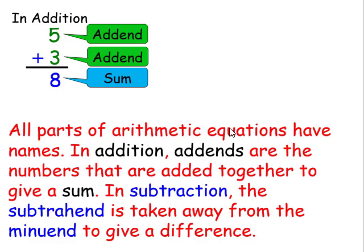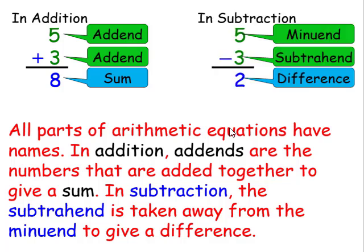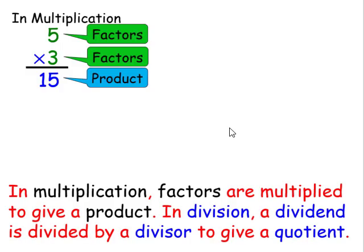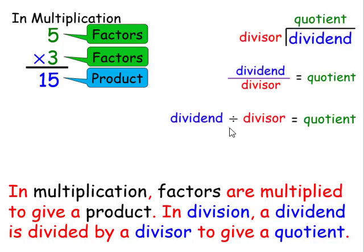All parts of arithmetic equations have names. In addition, addends are the numbers that are added together to give a sum. In subtraction, the subtrahend is taken away from the minuend to give a difference. In multiplication, factors are multiplied to give a product. In division, a dividend is divided by a divisor to give a quotient. Remember, a division symbol is just a fraction where the numerator and denominator are replaced with dots.